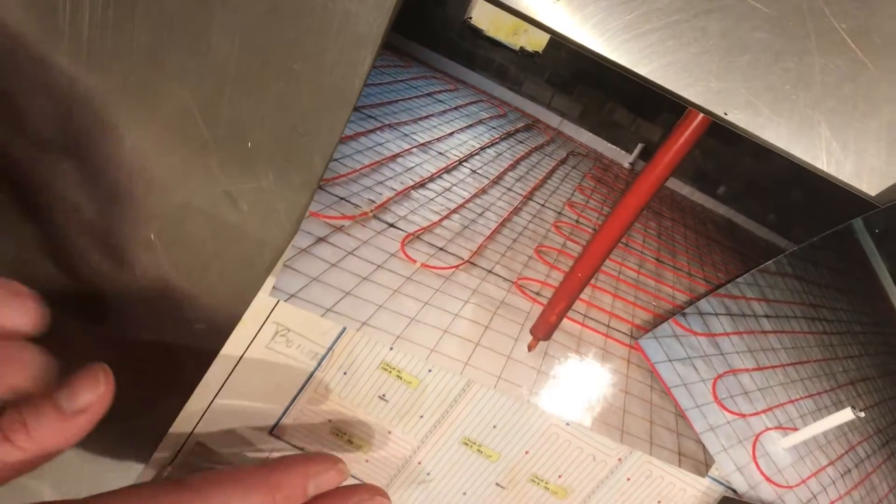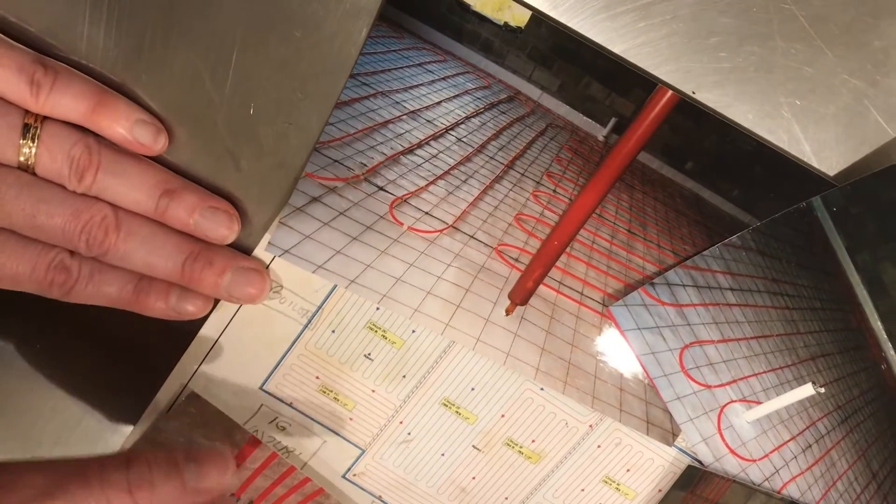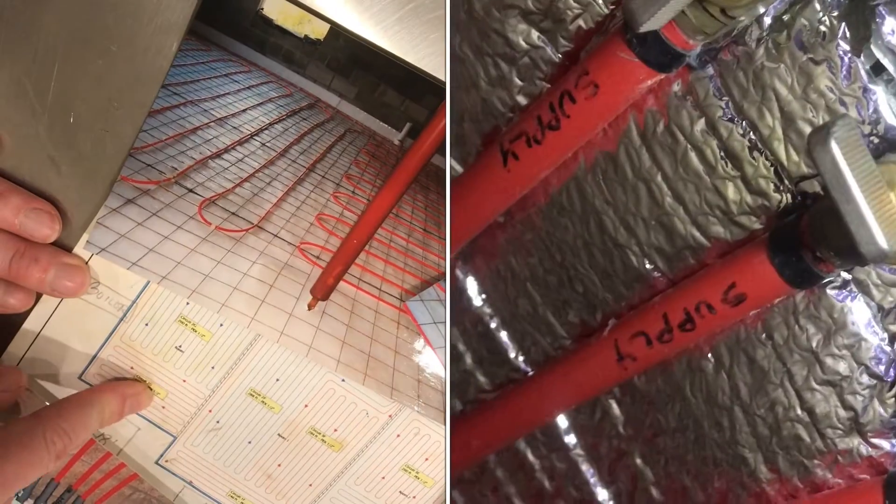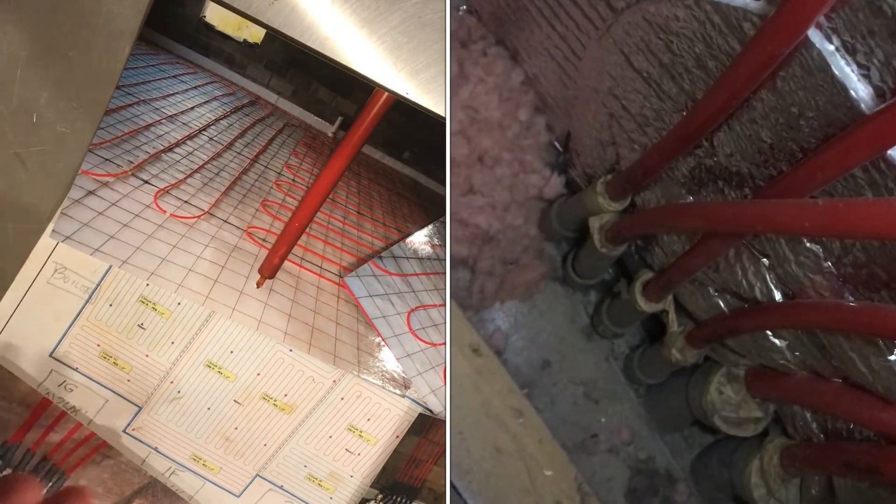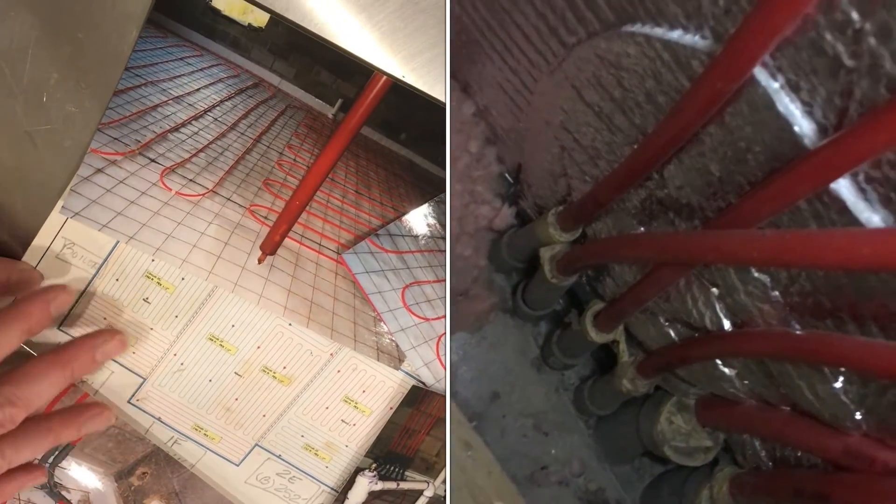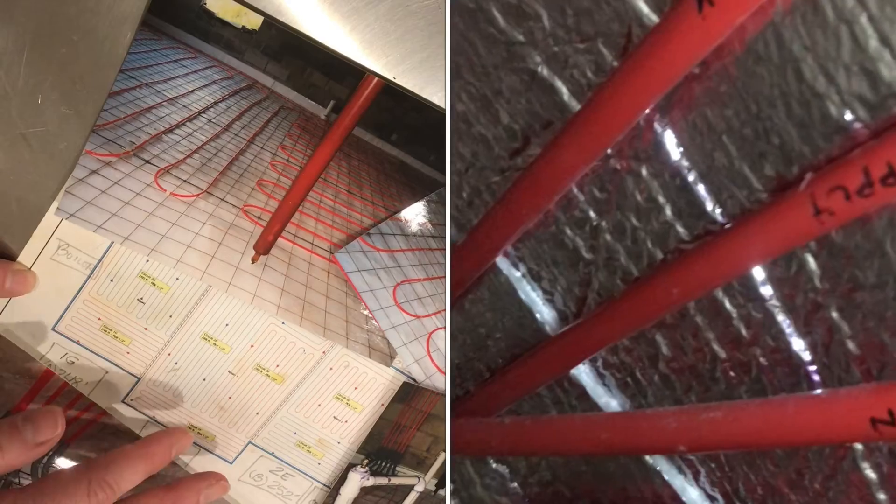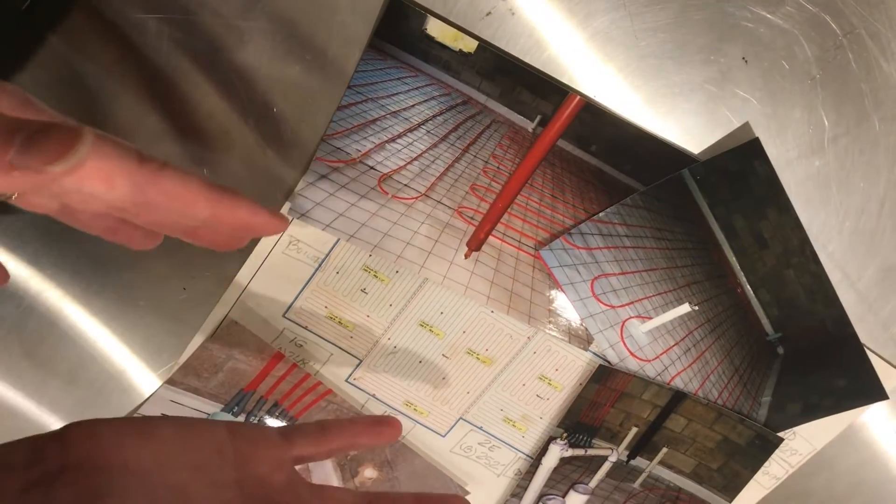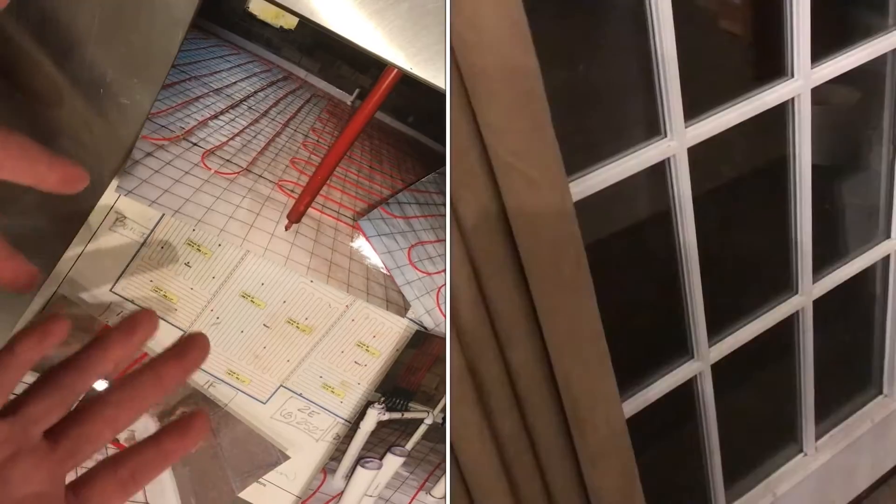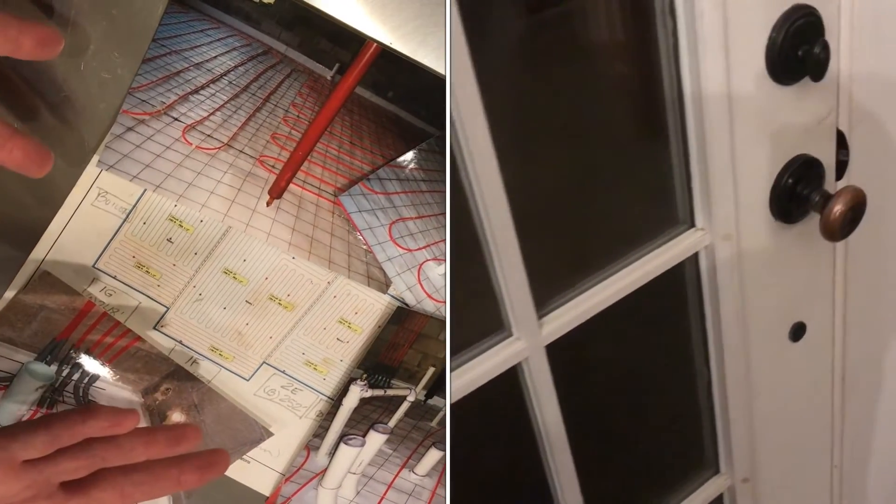Usually in a floor radiant heat system there are separate control knobs for each loop within the floor, and the reason for that is because you want to be able to control where you need the heat the most. Some parts of the building may have a lot more outside air coming in because it's the part of the room where you have a front door, for example.